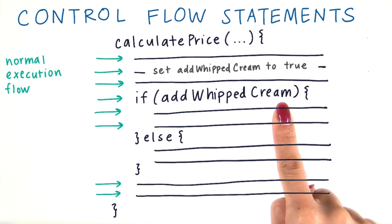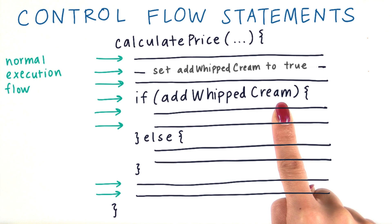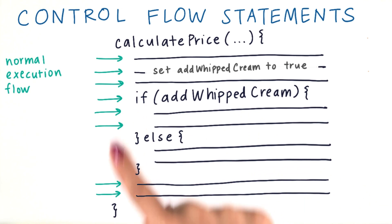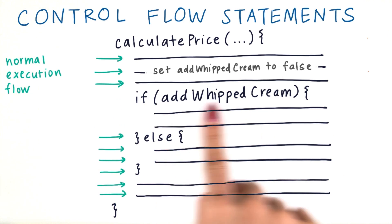So if this condition is true, meaning the Boolean variable was set to true up here somewhere, then these statements will be executed and it will skip this block of code. If this condition is false, then we execute these lines of code and then resume the normal linear flow of code after that.